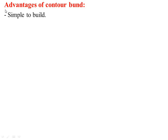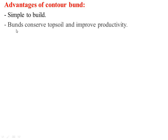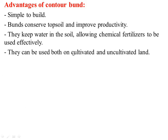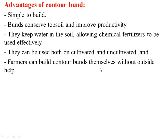The advantages of contour bunds include being simple to build. They conserve topsoil and improve productivity, keep water in the soil, and allow chemical fertilizers to be used effectively. They can be used on both cultivated and uncultivated land, and farmers can build contour bunds themselves without outside help.